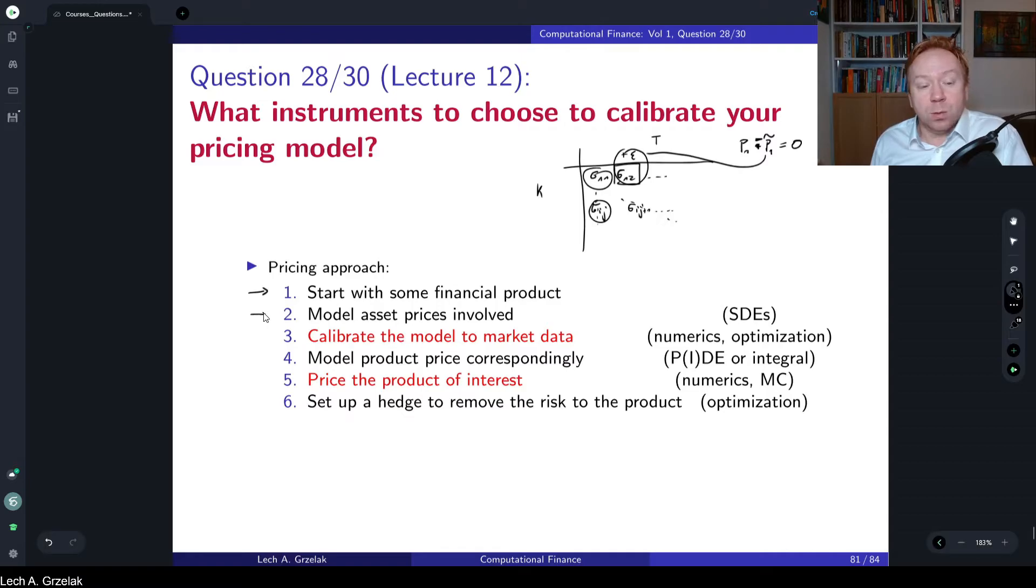Then we find what are the appropriate stochastic differential equations that are suitable for pricing of that derivative, whether we price something which is sensitive to the smile or skew, maybe stochastic interest rates and so on. This is the moment where we define a system of stochastic differential equations that is based on the product of interest. Next point is to calibrate the model.